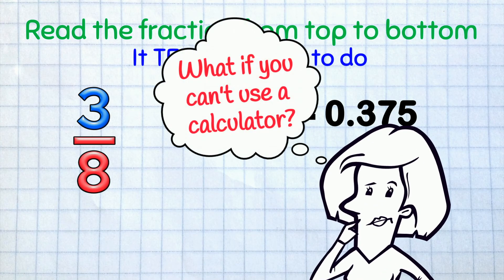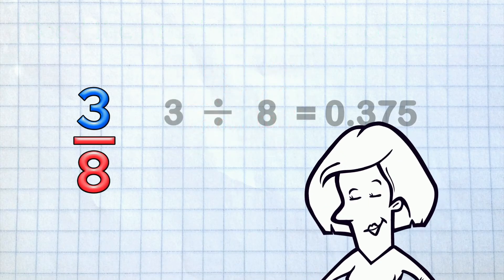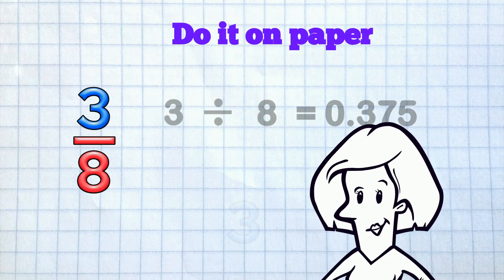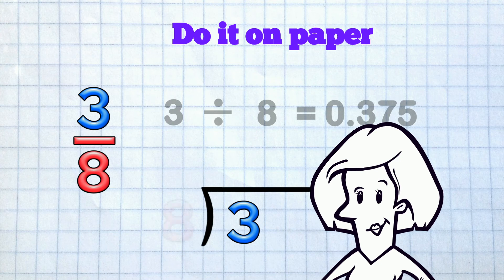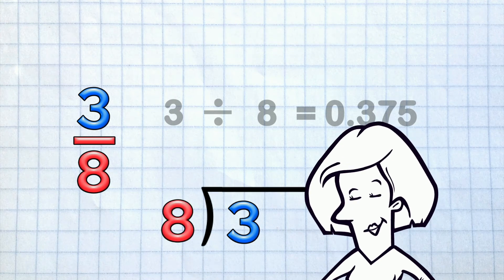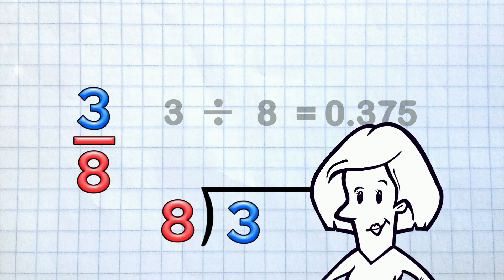But what if you can't use a calculator? For whatever reason? Then you do it on paper! 3 divided by 8. We're going to get a decimal remainder here. I think you've done those before, but here's a link to a review video just in case.